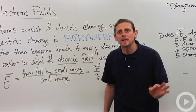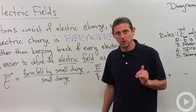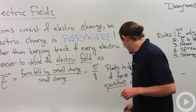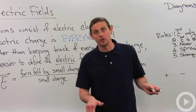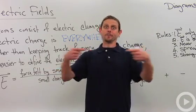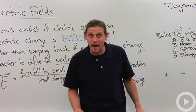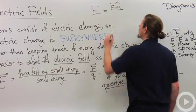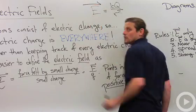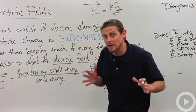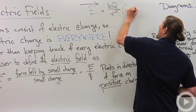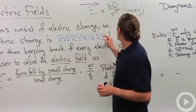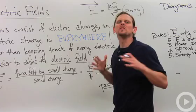The electric field always points in the direction of the force on a positive test charge. From Coulomb's law, the force equals K times one charge times the other charge over R squared, and it's attractive if the charges are opposite and repulsive if they're the same. When we divide by one of those charges, we get E = KQ over R squared. If Q is positive, the field points away because that's a repulsive force. If Q is negative, the sign changes and the field points toward the charge.